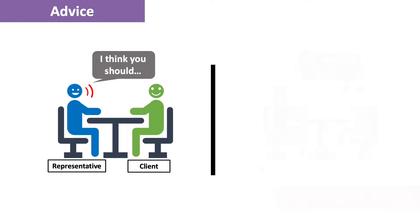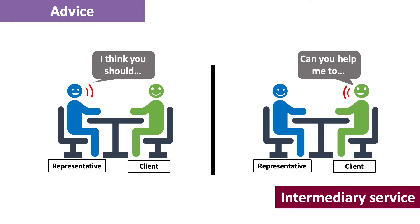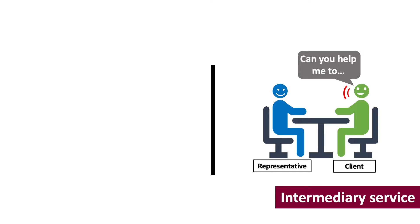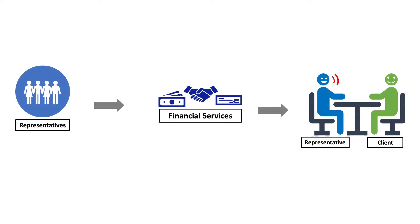So, if an FSP, KI or Rep recommends, guides or proposes to a client to buy a financial product like shares, that would fall under advice. But if a client wants to buy a financial product out of his or her own free will and needs an FSP, KI or Rep to help finalize the transaction, then that would fall under intermediary service. The giving of advice and/or rendering of intermediary service may lead to the conclusion of a transaction for a particular financial product.